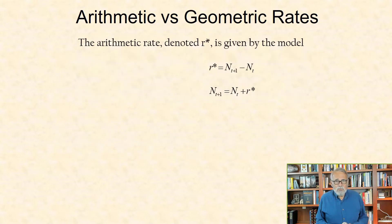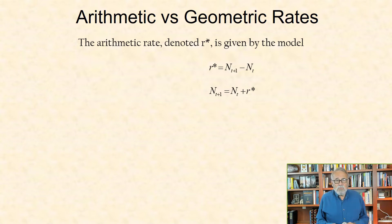The arithmetic rate, denoted R-star, is given by the model R-star equal the number at time t plus 1 minus number at time t, which, when rearranged, equals the number at time t plus 1 equal the number at time t plus R-star.